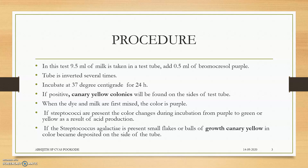When the dye and milk are first mixed, the colour is purple. If Streptococcus are present, the colour changes from purple to green or yellow as a result of acid production by Streptococcus agalactiae. This colour change takes place during the incubation period.